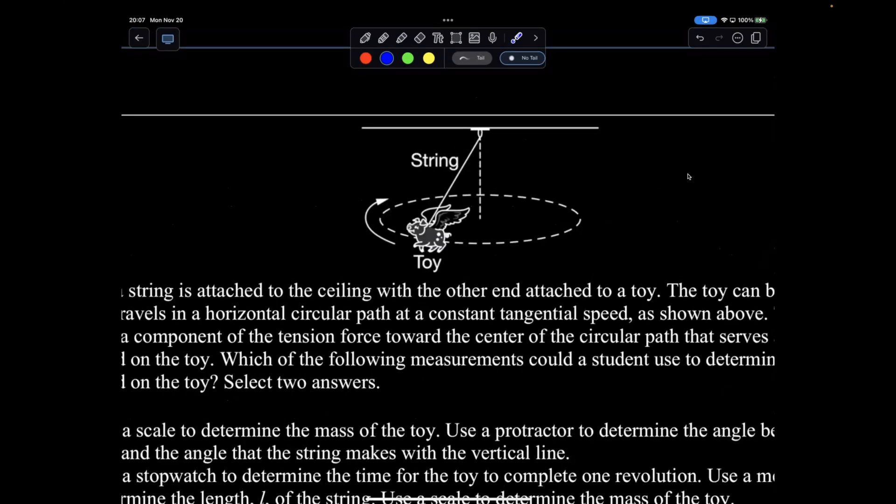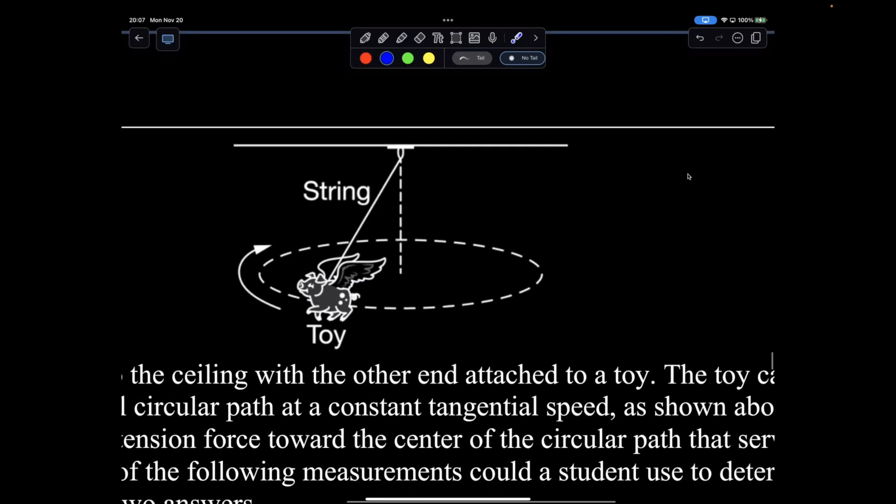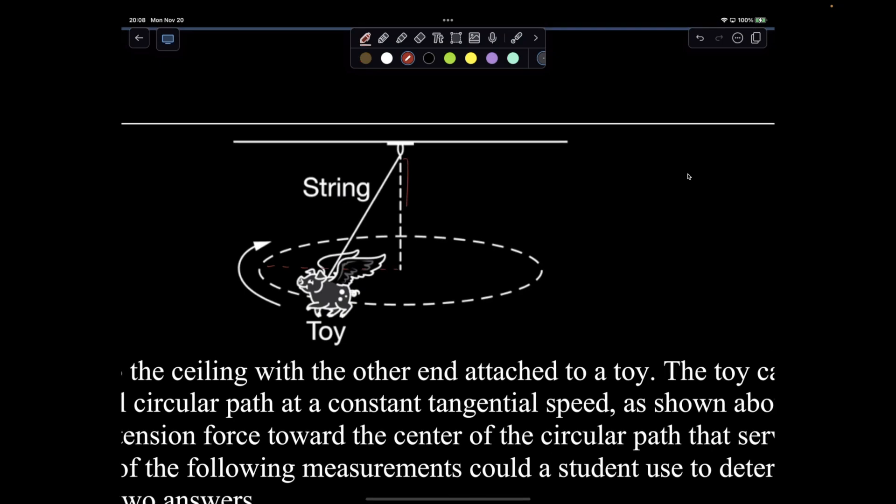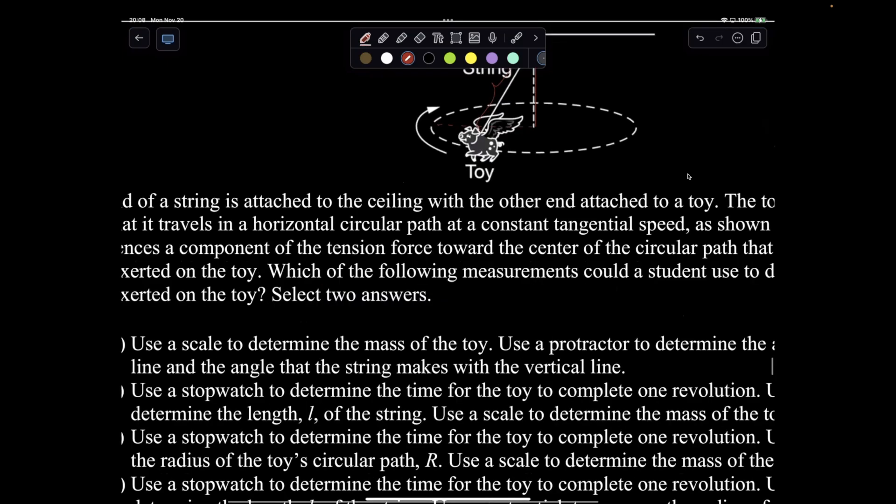Question 19 was about our When Pigs Fly lab. Remember what you did in the lab. You had that pig fly around, use the laser to figure out the radius, and you used a meter stick and laser to pinpoint where it was. You measured the length of the string. They're talking about the length of the string as L.